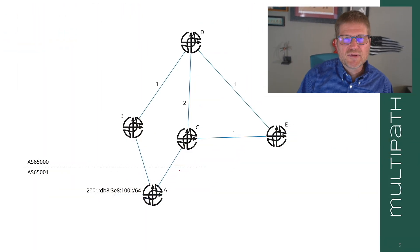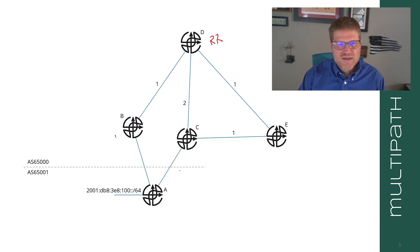Now there's this interesting problem with route reflectors, which is that the route reflector itself doesn't always choose the optimal path. So let's make D in this network a route reflector. And let's make C a route reflector client, and B a route reflector client, and E a route reflector client.